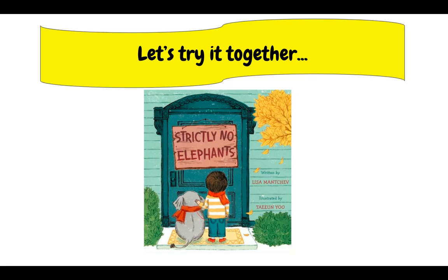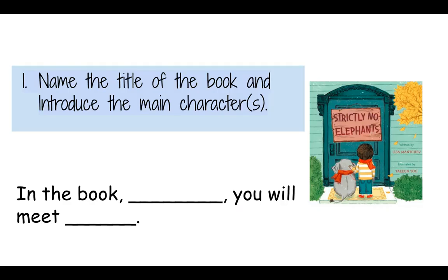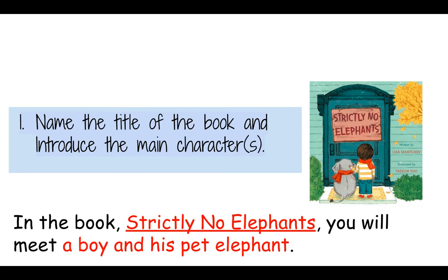Let's try it together now. Here's another popular read aloud that was actually a book of the month — it's called Strictly No Elephants. Do you remember the story? The first thing we're going to do is name the title of the book and introduce the main characters. I added a little sentence starter to help you say it out loud, so practice it with me now: In the book [blank], you will meet [blank]. Fill in those blanks and say it out loud. Did you say: In the book Strictly No Elephants, you will meet a boy and his pet elephant? Sounds good! I hope you underlined Strictly No Elephants in the air as you were speaking.